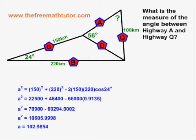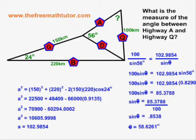At that point, we can switch into the upper triangle, because knowing the length of Highway D, we now have enough information to use sine-law. The sine-law calculation will look like this: 100 over sine 56 degrees is equal to 102.9854 over sine of the unknown angle theta.